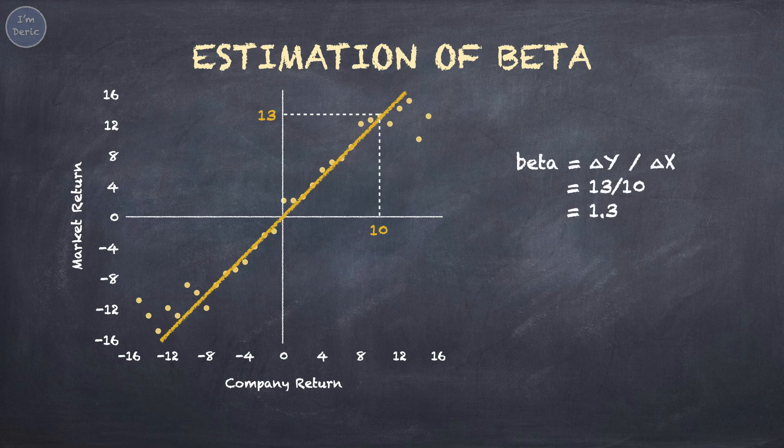Mathematically, beta is calculated based on delta Y over delta X — simply speaking, the change in Y over the change in X gives you the beta.